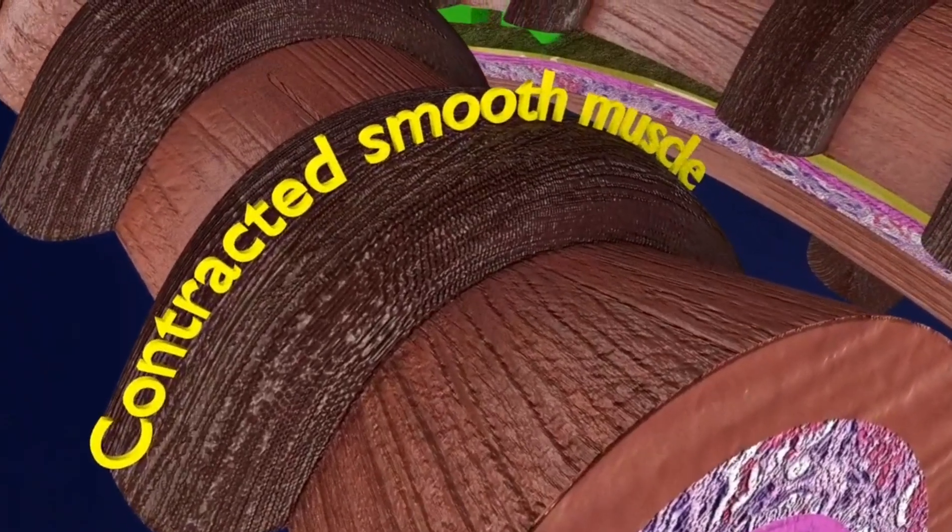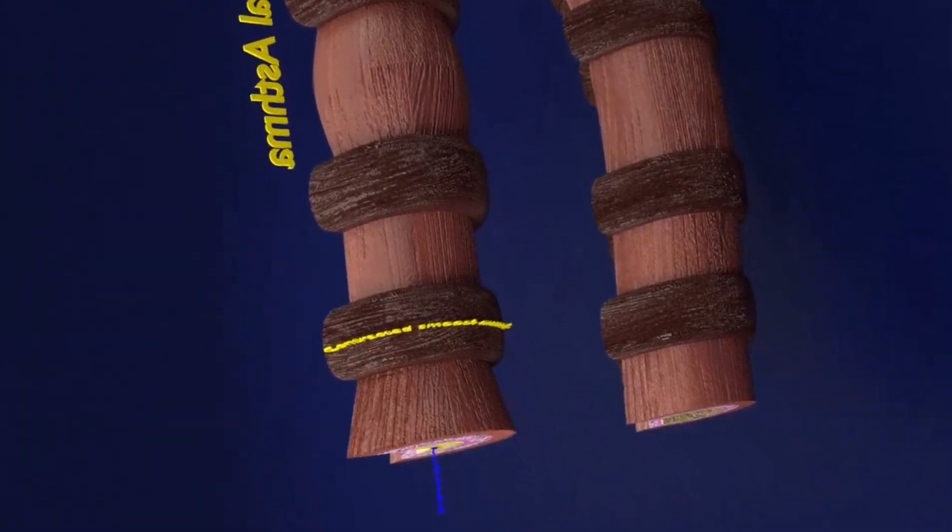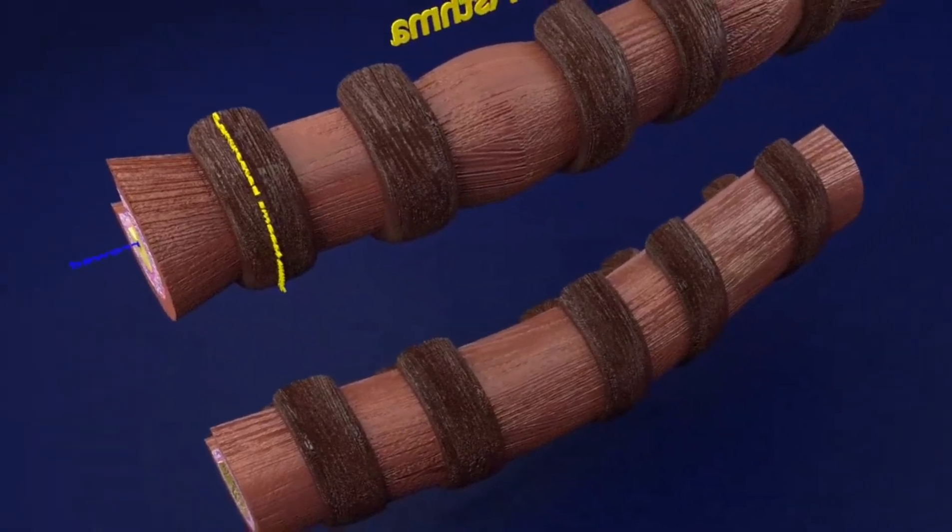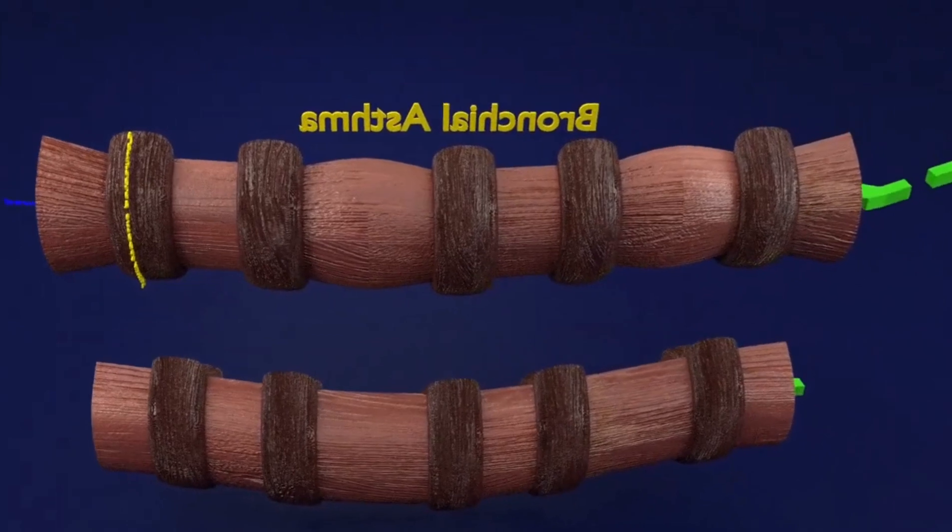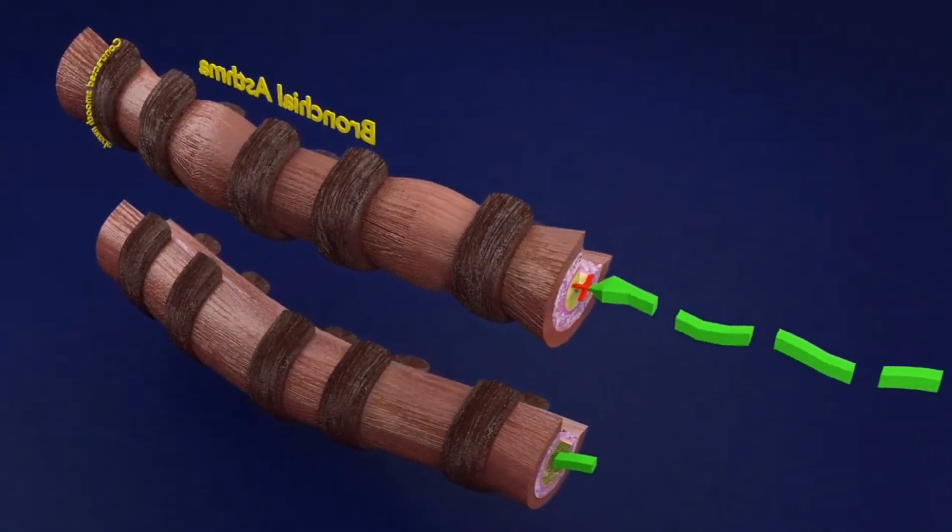The bronchial lumen is narrowed and the airflow limitation, as you see here, leads to respiratory symptoms. The symptoms include recurrent episodes of wheezing, coughing, chest tightness, and shortness of breath.